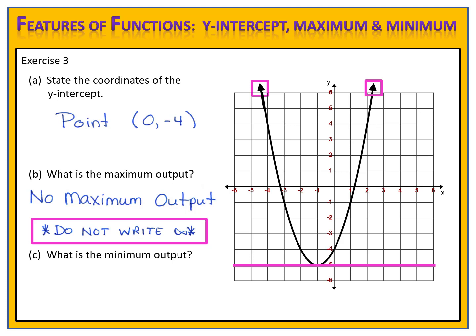Part C — what is the minimum output? Look at the bottom of the graph, the lowest point. What is the y-value there? The y-value is negative 5, so the minimum output is negative 5.